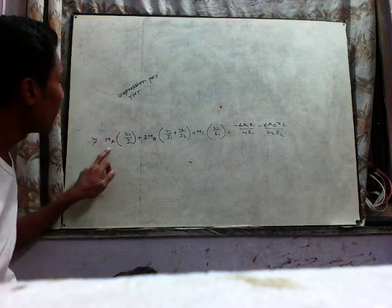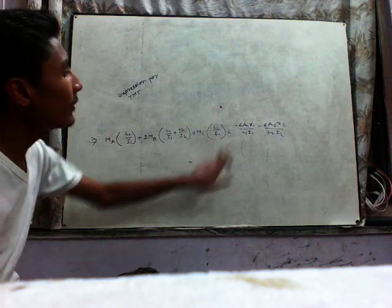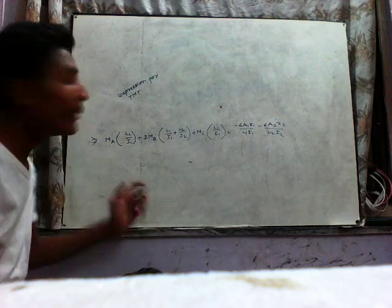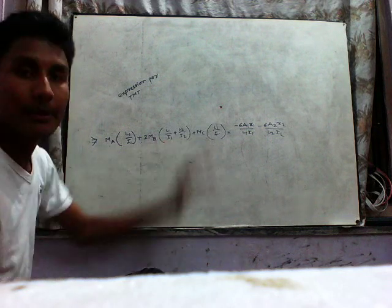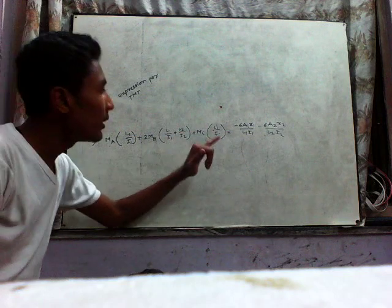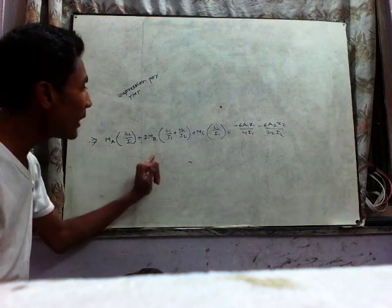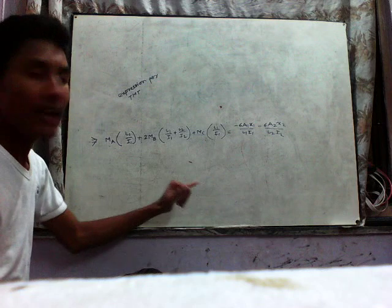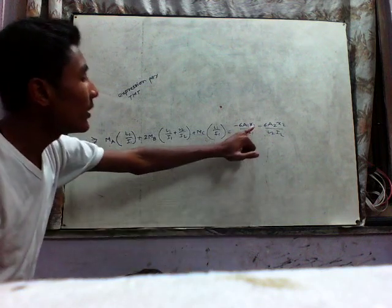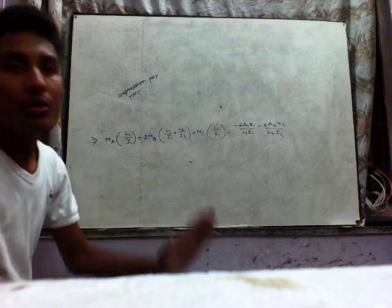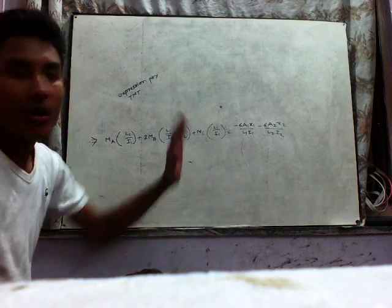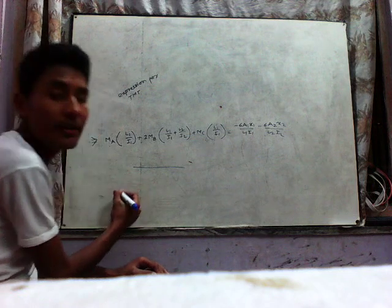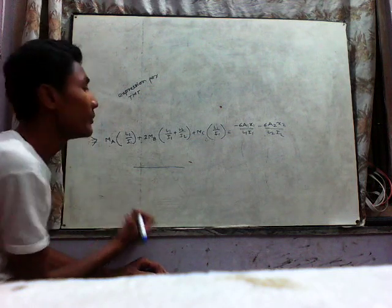Now, what are MA, MB, MC, L1, I1, A1, x1? MA, MB, MC are the moments along points A, B, and C respectively. L1 and L2 are the lengths between points A-B and B-C. I1 is the moment of inertia between A-B and I2 between B-C. x1 is the distance from the initial point to the midpoint, and A is the area of both regions.